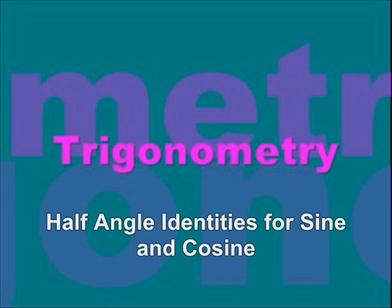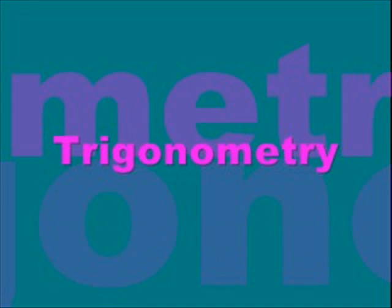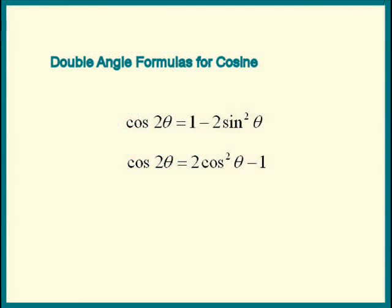Welcome back, everyone. In this lesson, we're going to derive the half-angle identities for sine and cosine. Cosine of 2 theta was given in terms of sine squared theta and cosine squared theta. If we express sine squared theta in terms of cosine 2 theta, we'll obtain a half-angle formula for sine.